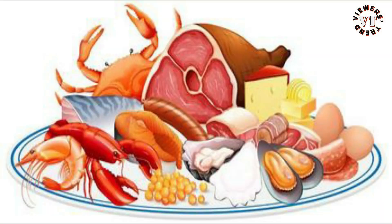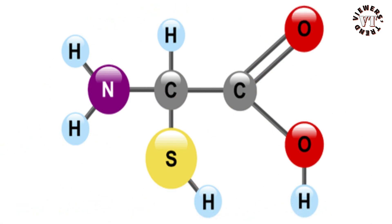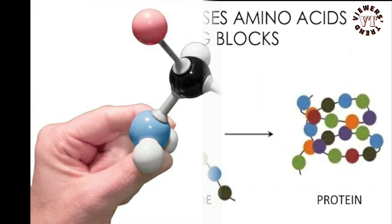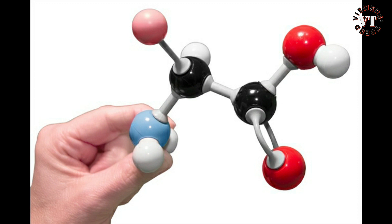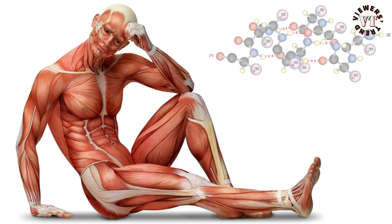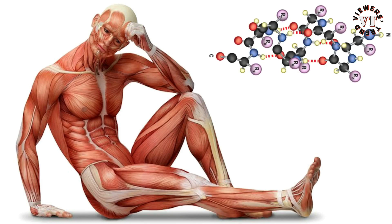Proteins are made up of amino acids, which are a type of molecule. The basic components of life are amino acids and proteins. Amino acids remain after proteins have been digested or broken down. Amino acids are used by the human body to create proteins, which aid in the following functions.